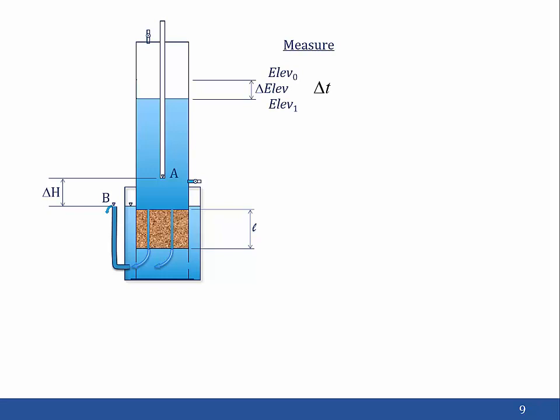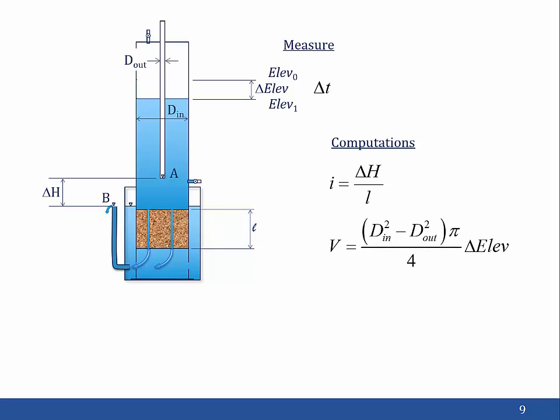The change in elevation can then be determined, and you now have all the data needed to compute the hydraulic conductivity. The computations are: first, compute the hydraulic gradient as delta H over L. The volume V flowing through the sample equals the inside diameter of the Mariette bottle squared minus the outside diameter of the standpipe squared, times pi divided by 4, all times the change in elevation. Once you know the volume, calculate the flow rate Q as V over delta T. Finally, compute the hydraulic conductivity K as Q over the quantity I times A. You should make measurements at three or four different gradients for each specimen by adjusting the elevation of the standpipe and Mariette bottle, giving multiple measurements which you can average to get an average hydraulic conductivity.